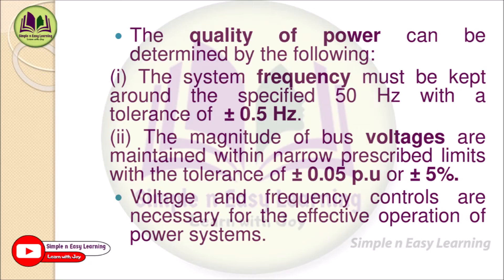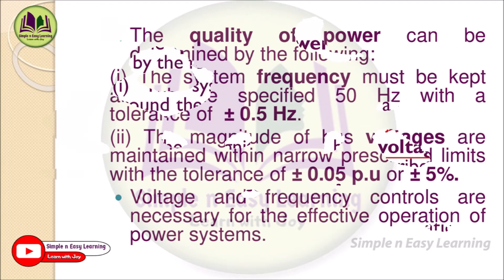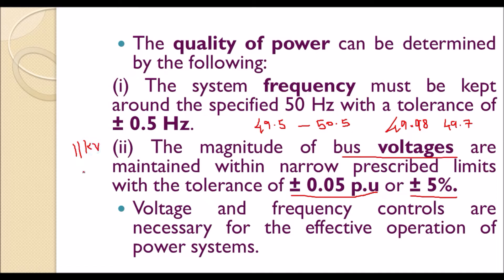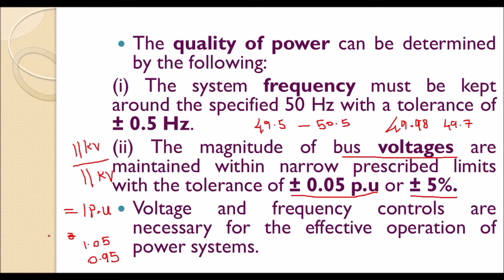The magnitude of bus voltages must be maintained within prescribed limits with a tolerance of plus or minus 0.05 per unit. Bus voltage is ideally maintained at 1 per unit — for example, if the actual value is 11 kV and the base value is 11 kV, the per unit value equals 1. The allowable range is 0.95 to 1.05 per unit. Within this range, good quality power is delivered, making voltage and frequency control necessary for effective power system operation.